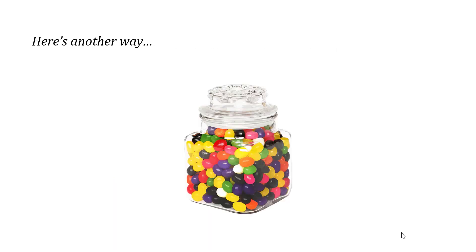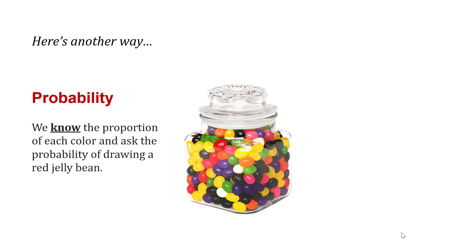Here's another way. Imagine we have a jar of jelly beans. With probability, we know the proportion of each color—how many reds, purples, yellows, and greens. And we ask the probability of drawing a red jelly bean from the jar. We know the proportion, and we look at the probability of drawing a certain color.